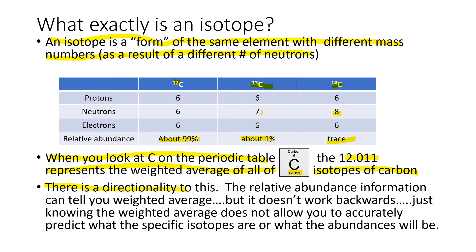There's an important directionality to this. The relative abundance information can tell you the weighted average, but it doesn't work backwards. Just knowing the weighted average does not allow you to accurately predict what the specific isotopes are or what the abundances will be. If I know the isotopes and their abundances, I can calculate the 12.011. But if I only know 12.011, I can't figure out what's going on with the specific isotopes.